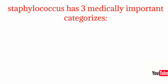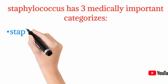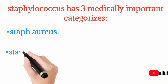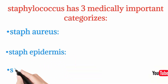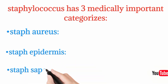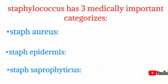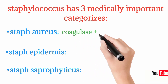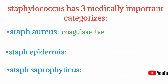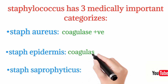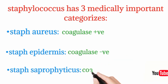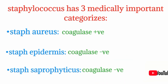Staphylococcus has three important medical categories: Staph aureus, Staph epidermidis, and Staph saprophyticus. To differentiate them, Staph aureus is coagulase positive — it produces coagulase enzyme — while Staph epidermidis and Staph saprophyticus are both coagulase negative and do not produce the coagulase enzyme.